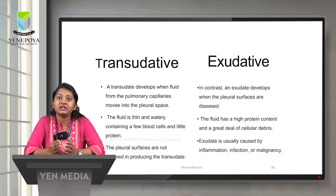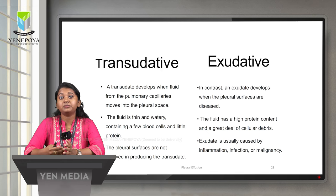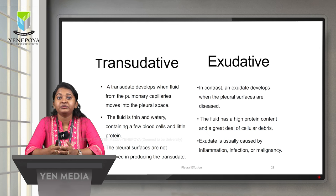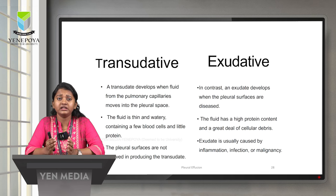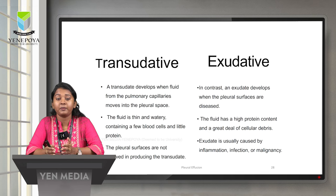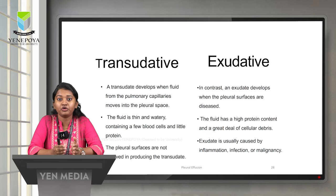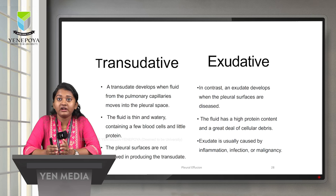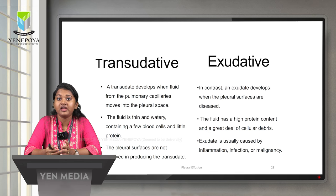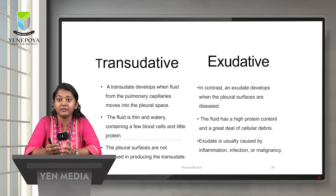A transudative effusion develops when fluid from the pulmonary capillaries moves into the pleural space. This fluid is thin and watery, containing very few blood cells and little protein. Transudative effusion can be due to heart failure, cirrhosis of the liver, or nephrotic syndrome. The pleura and lung are not involved — the pleural surfaces are not involved in producing a transudate. In contrast, exudative effusion develops when the pleural surfaces are diseased. This fluid has very high protein and a great deal of cellular debris, and is usually caused by inflammation, infection, and malignancy.